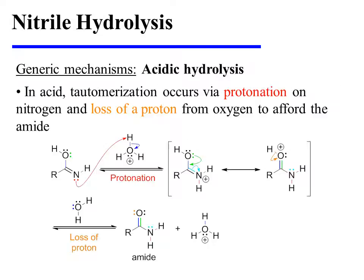In acid, tautomerization occurs via protonation on nitrogen. This yields a resonance-stabilized cation, which can lose a proton from oxygen to afford the amide.